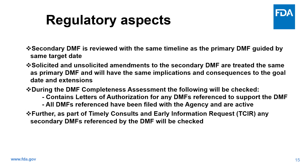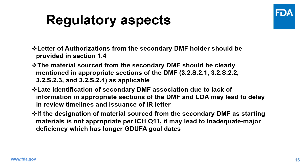During the DMF completeness assessment, LOAs from the secondary DMFs and whether the secondary DMFs are active with the agency will be checked. Further, as part of TCIR, any secondary DMFs referenced by the DMF will be checked. Letters of Authorization from the secondary DMF holder should be provided in section 1.4, and the material sourced from the secondary DMF should be clearly mentioned in the appropriate sections of the DMF. Late identification of secondary DMF associations due to lack of information in appropriate sections and the LOA may lead to delays in review timelines and issuance of an Information Request letter.